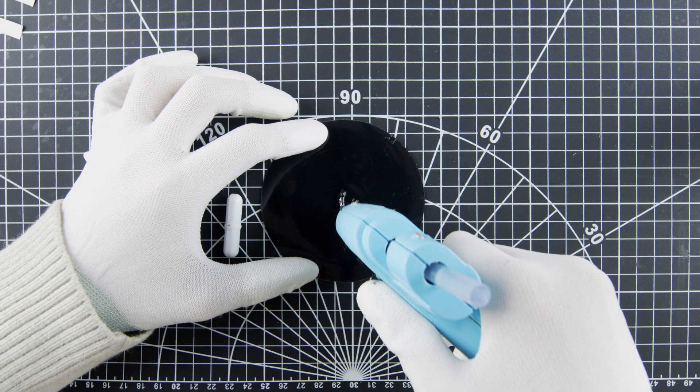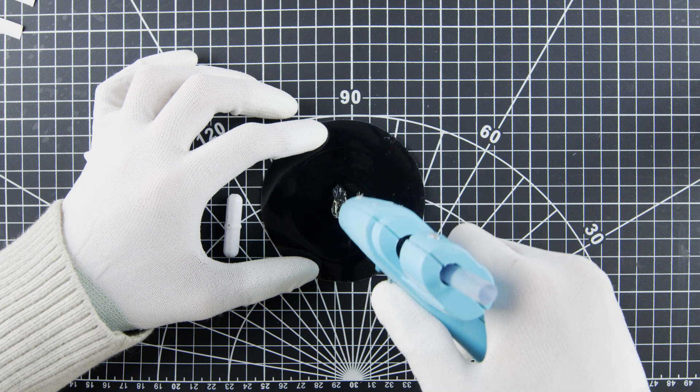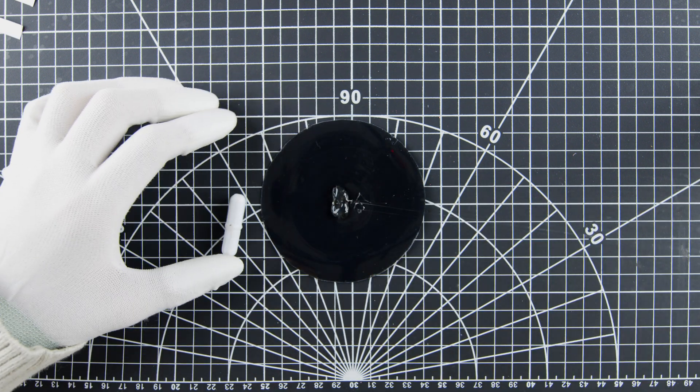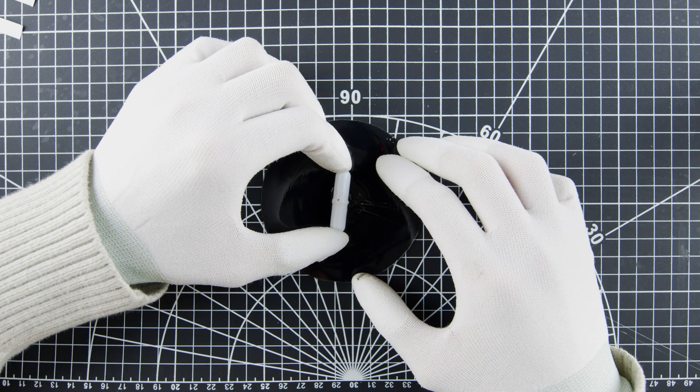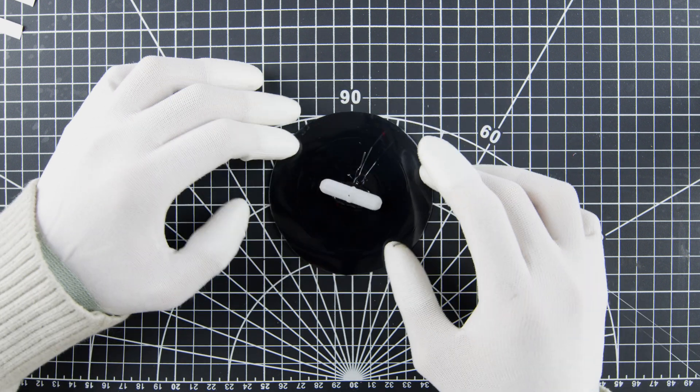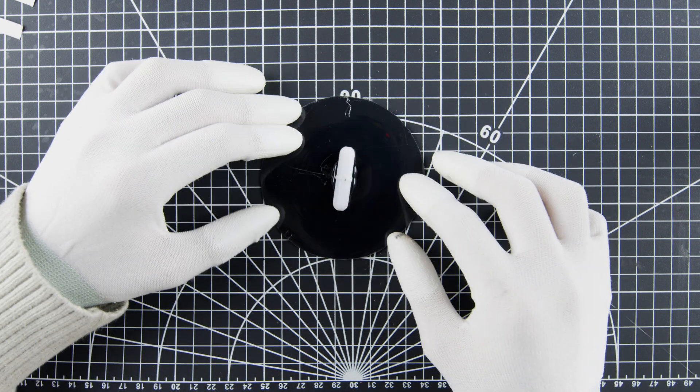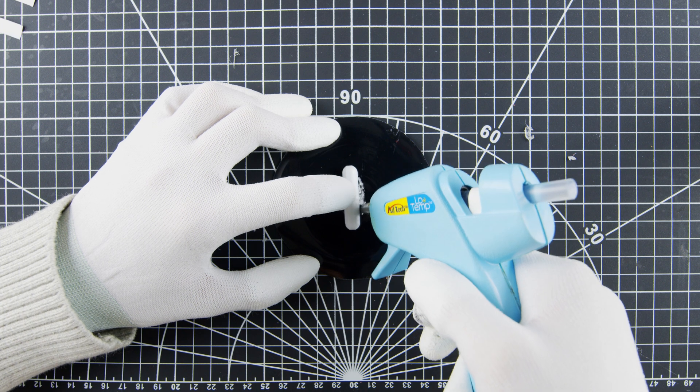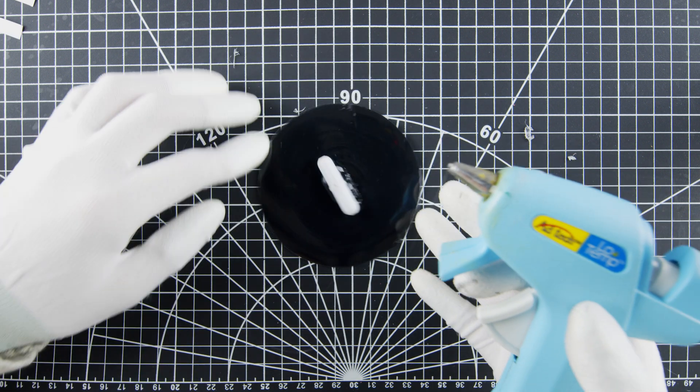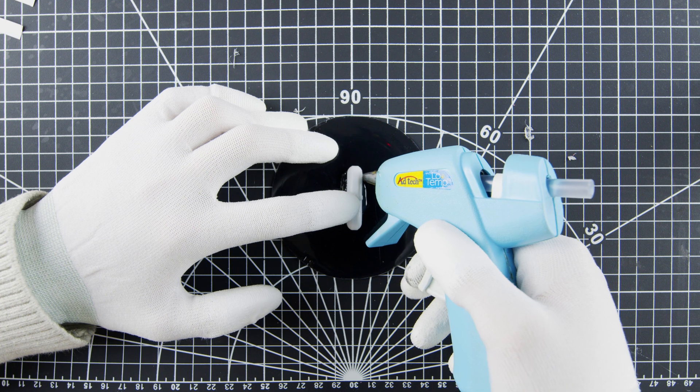Then, I glued on the magnetic stir bar. I applied ample amounts of glue to ensure a solid connection. Don't worry, these stir bars have a PTFE casing. It is more commonly known as Teflon. It will not stick well to the hot glue so it is easily removable after you finish your experiment.